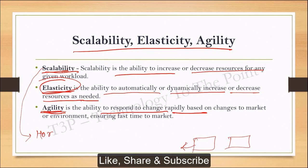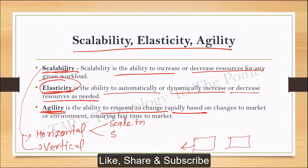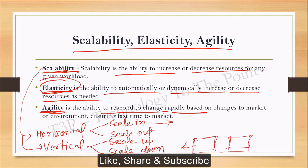Now we will talk about scalability — there are two ways: horizontal and vertical. For horizontal scaling, scale out means we are adding servers to the system as needed based on the load. If the load increases, we scale out by adding more servers.